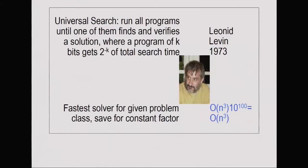This goes back, at least, to Leonid Levin, who in 1973 proposed universal search. The basic idea is you have a problem, you don't have a teacher who tells you how to solve it — you have to find a program that computes a solution. You also have to verify that the solution is correct, and the process of verification will also cost you something. Some problems are easy to verify, for example whether you won a chess game.